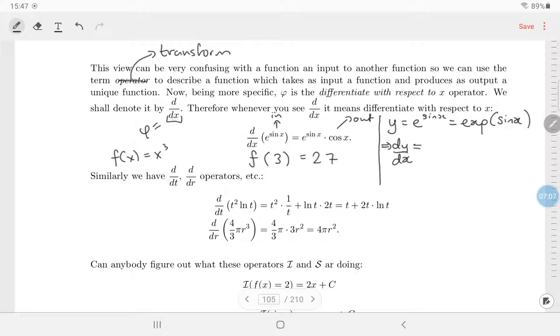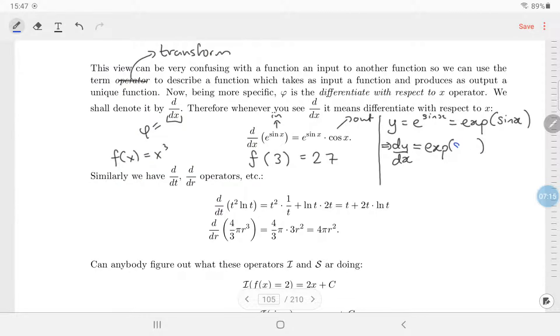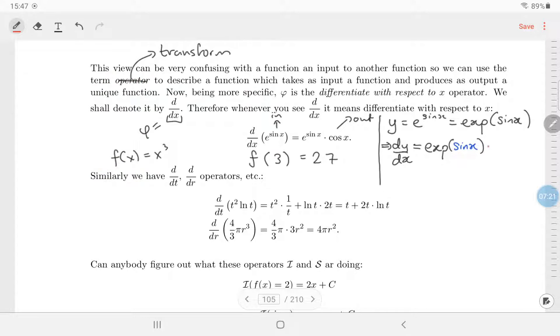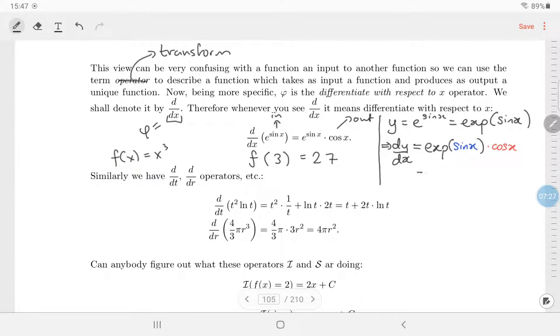The chain rule says differentiate the outside, so the derivative of exponential is exponential. The chain rule says evaluate that at the inside, the inside is sine of x, and then times the derivative of what's inside, and the derivative of sine of x is cos of x. And then I'll just rewrite the exponential as e to the sine x, so it's e to the sine x times cos x.